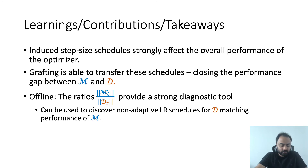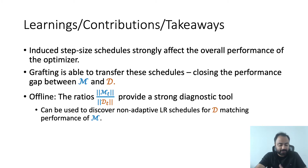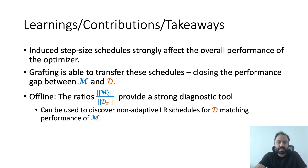We run this idea in practice over multiple datasets ranging from NLP and vision, and for multiple choices of D. The main takeaways from our experiments are that the induced step-size of algorithms strongly affects the overall performance of the optimizer, and that grafting is able to transfer these schedules between algorithms, thereby often closing the performance gap between them.